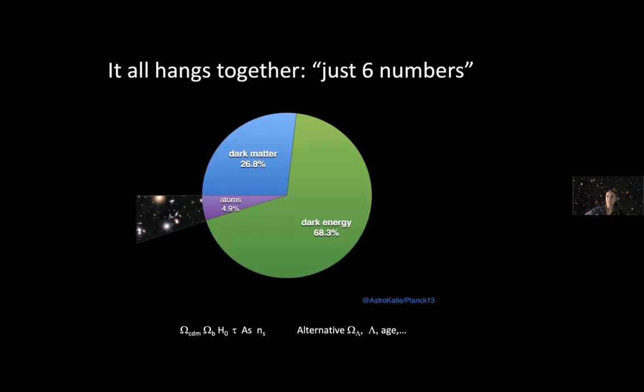It hangs all together with just six numbers, as Sir Martin Rees says. We have the cosmic pie of the composition of the universe. The just six numbers are the cosmological parameters: density of cold dark matter, matter density of baryons, the current expansion rate of the universe, a parameter that says when the first stars switch on, the amplitude of the primordial perturbation, and its spectral slope.